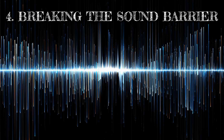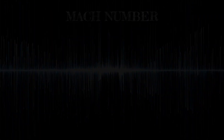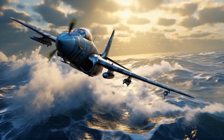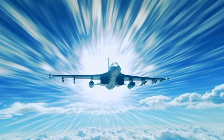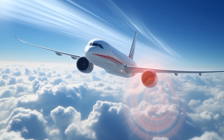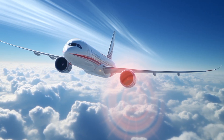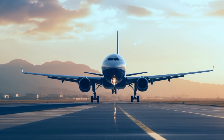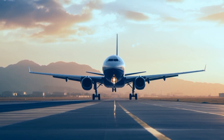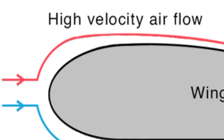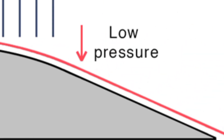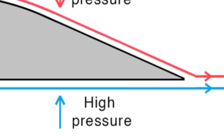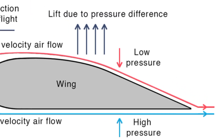Breaking the sound barrier. Mach number is a way to tell how fast something is going compared to the speed of sound. Going faster than the speed of sound? That's breaking the sound barrier, and you're in supersonic territory. Bernoulli's Principle is a big deal in aerodynamics — it says that when air speeds up, its pressure drops, and where it slows down, its pressure rises. This difference in pressure helps create lift.